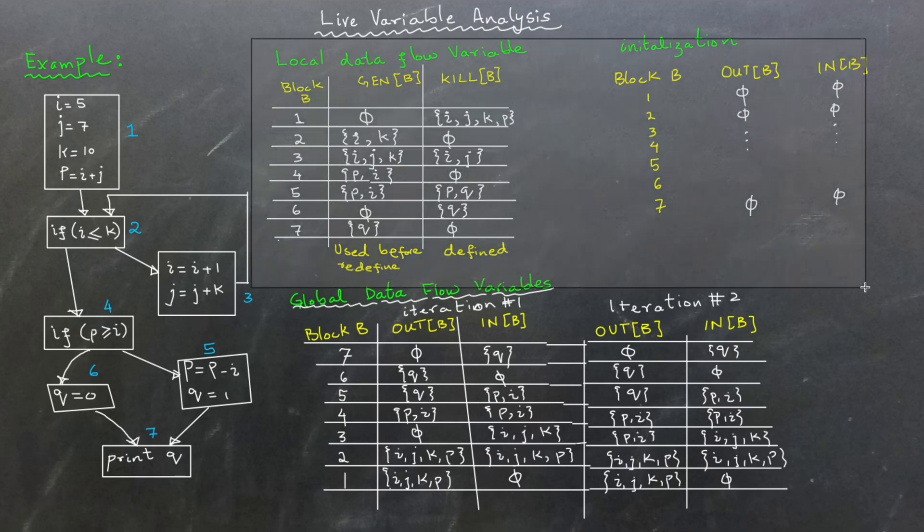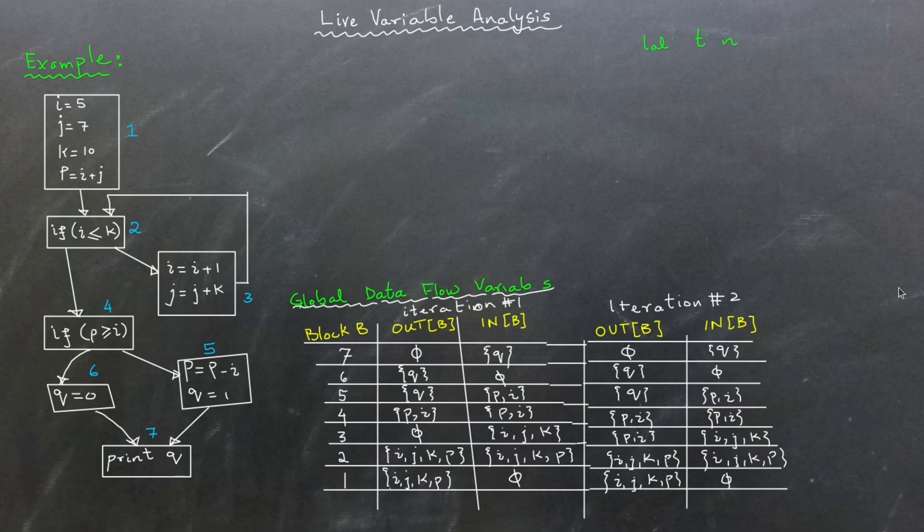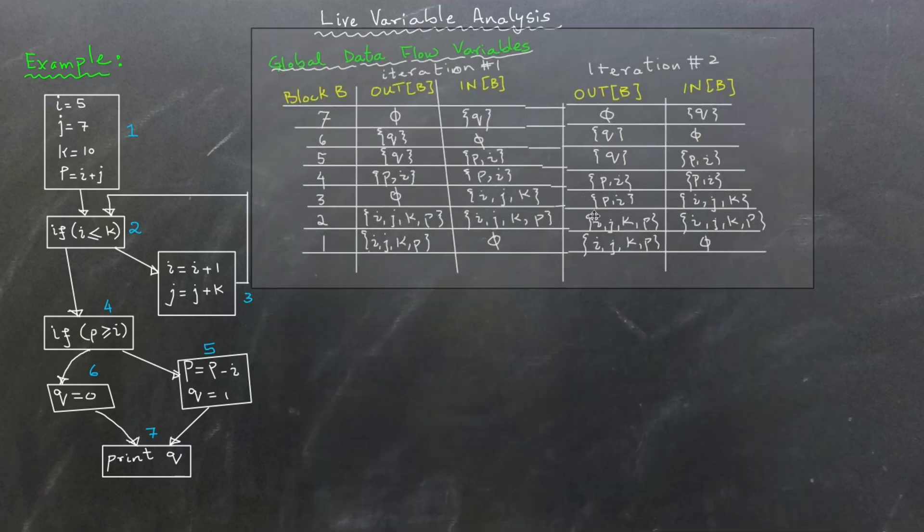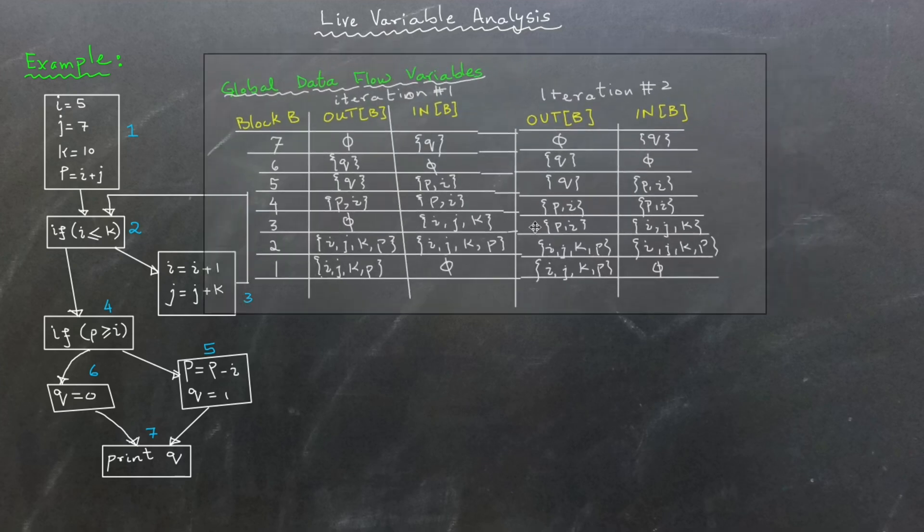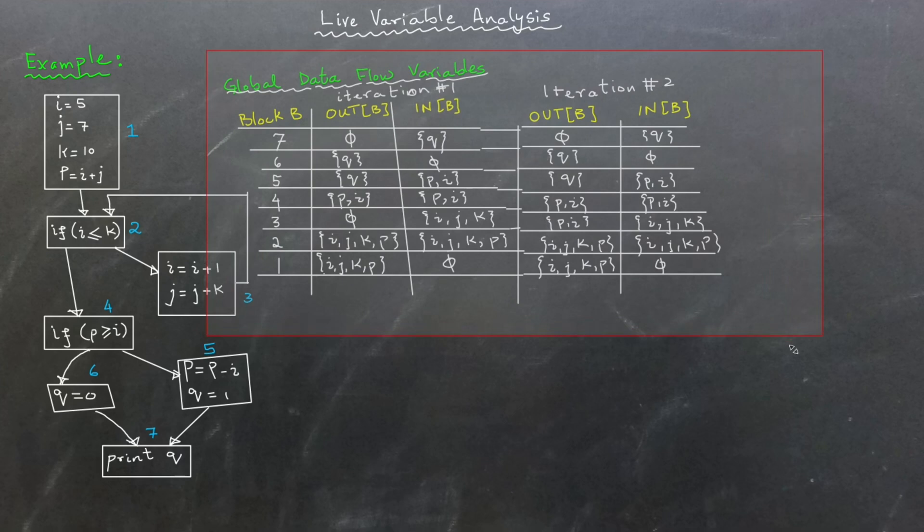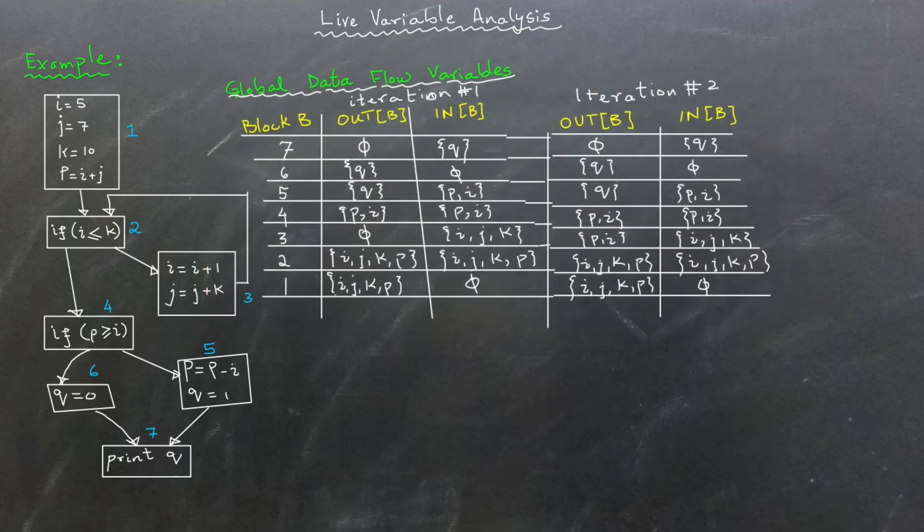After two iterations, the global data flow variables converge and stop changing. You will notice that in the second iteration, block 3 information is updated, reflecting the contributions from its successors. By the third iteration, no further changes occur. So we are stopping at second iteration. The next step is to use this table to identify and eliminate unnecessary variables. Please let me first copy the table above and remove everything else so that I can calculate the dead variables easily.